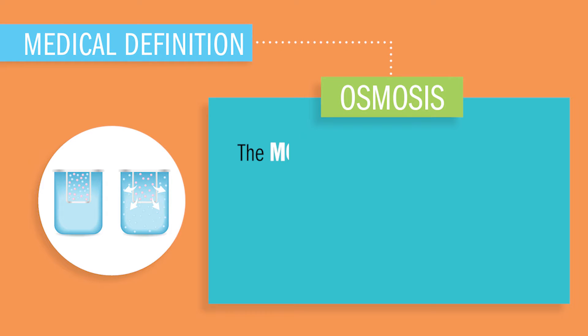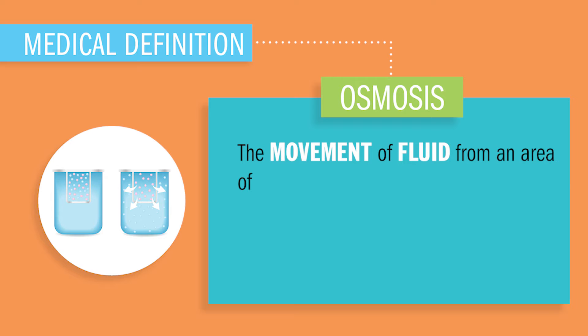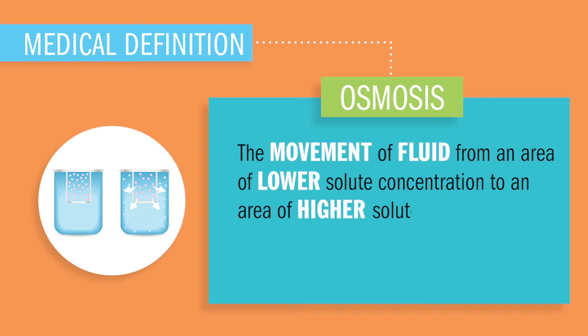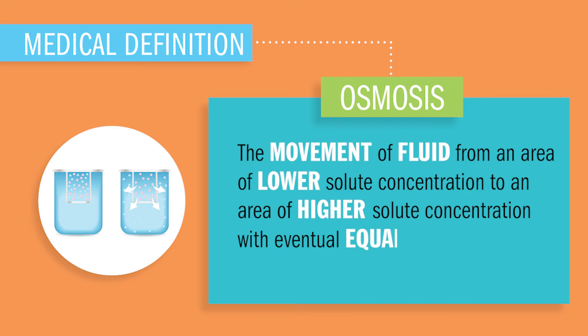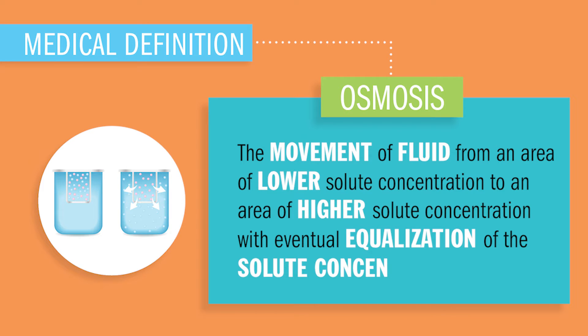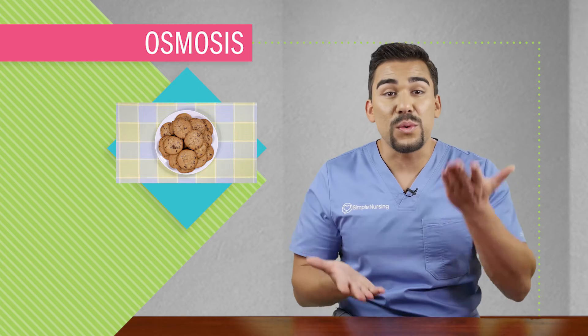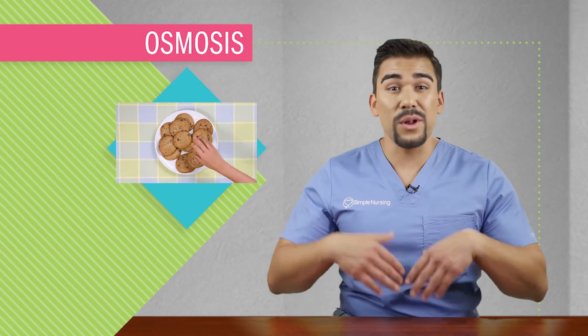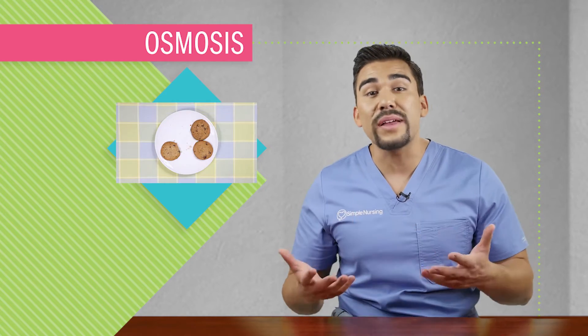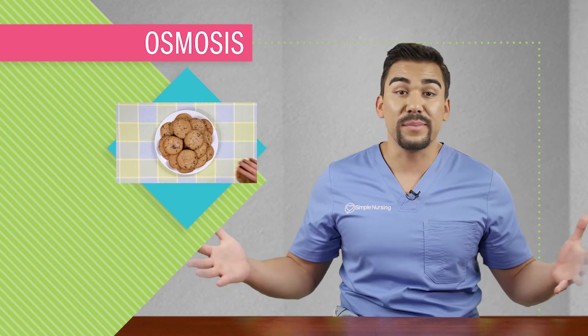Osmosis is kind of like the wet version of diffusion. Osmosis is the movement of fluid from an area of lower solute concentration to an area of higher solute concentration, with eventual equalization of solute concentrations. Basically, the whole goal of diffusion and osmosis is to balance and equalize things. We don't want any clumping or crowding — it's all about sharing, because sharing is caring.